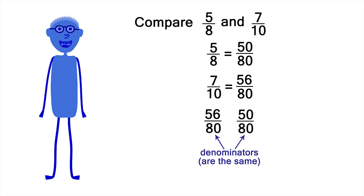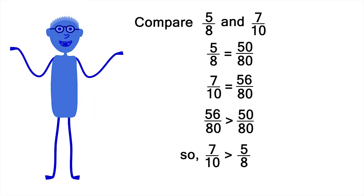Now we can compare the numerators, because the denominators are the same. 56 is bigger than 50. Or 56 eightieths is bigger than 50 eightieths, which means 7 tenths is bigger than 5 eighths.